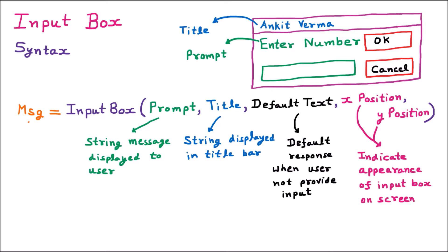Next we have a variable — here named MSG, but it can be any name such as A, B, C, or any variable. This variable is going to store the input given by the user. Suppose the input box appears and the user enters the value 57 and clicks OK. This value 57 will be stored in the MSG variable. So the MSG variable stores the input given by the user.